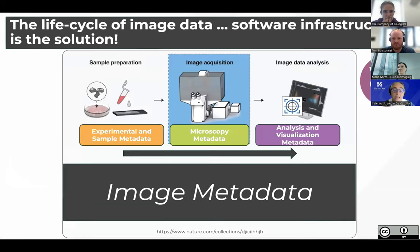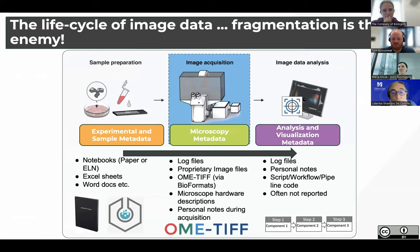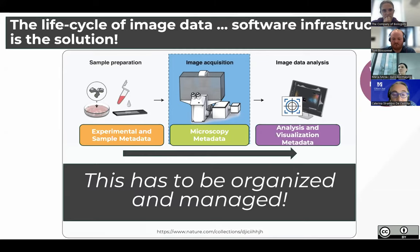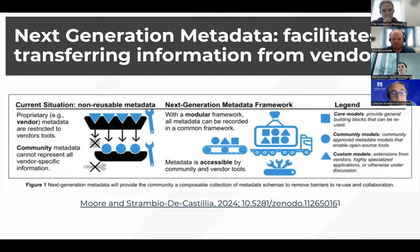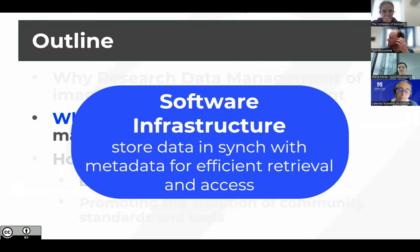Another really important piece is machine-actionable metadata. Image metadata covers both experimental microscopy metadata and analysis metadata from all stages of the life cycle. Right now it's all over the place in notebooks and log files — it has to be organized and made interpretable by downstream software. We also need open data formats that allow different software to read metadata and data in a similar, organized fashion so everything can be compared. This is an example of a next-generation format plan for metadata being developed by Josh Moore, with a publication on Zenodo if you're interested.